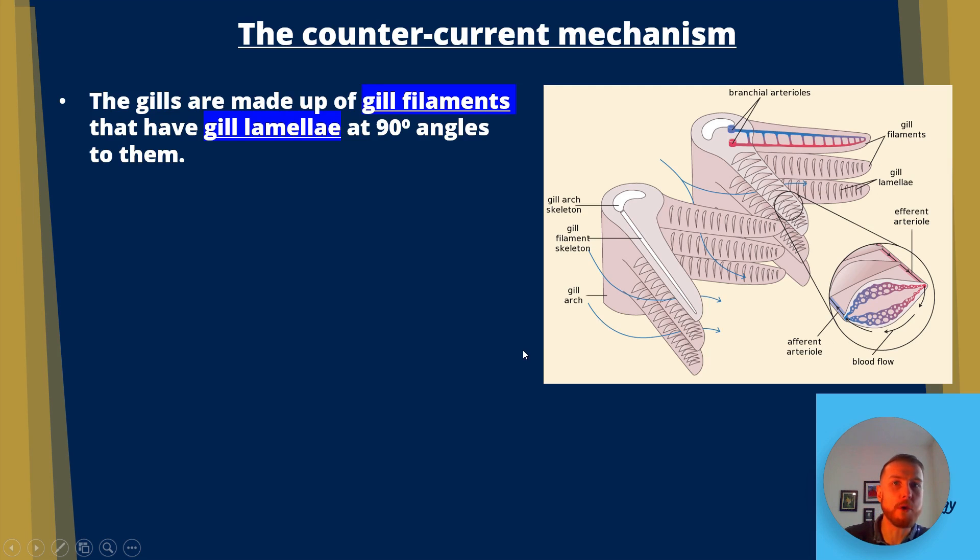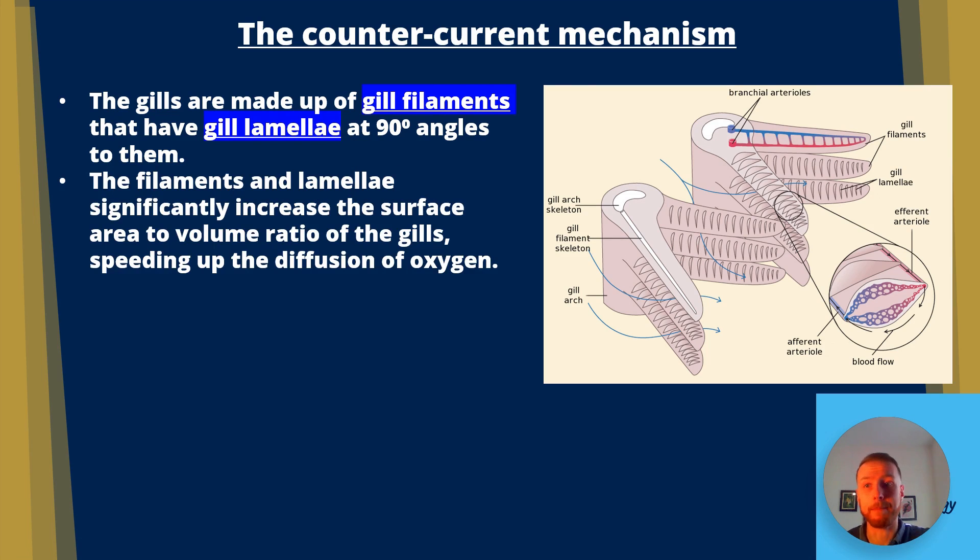So some notes on the countercurrent mechanism here. The gills are made up of gill filaments that have lamellae at 90 degree angles. The filaments and lamellae significantly increase the surface area to volume ratio of the gills speeding up the diffusion of oxygen.